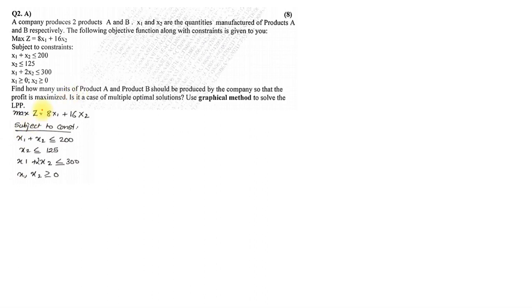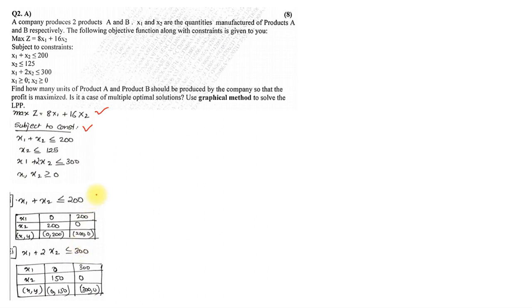So first we have noted down the max Z subject to constraints, the three equations that they have given us. Now x1 plus x2 equals 200 and x1 plus 2x2 equals 300. We need to find the coordinates for that. The second equation is directly given: x2 equals 125. So for the first and the third equation we'll have to find the coordinates.